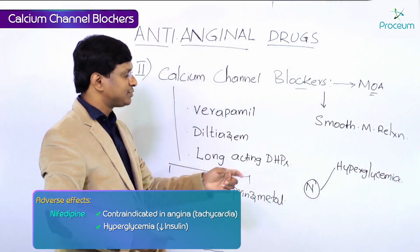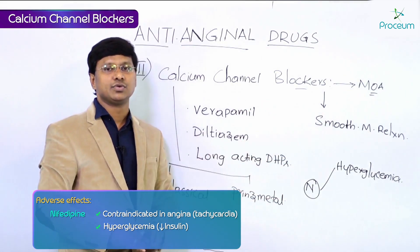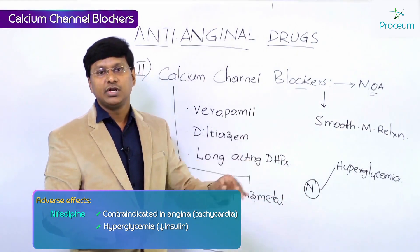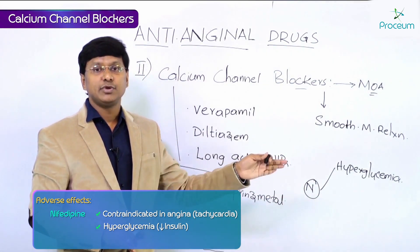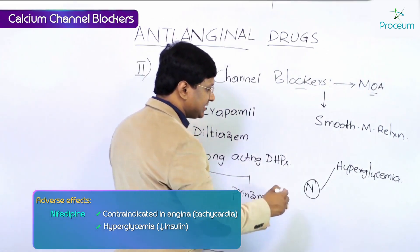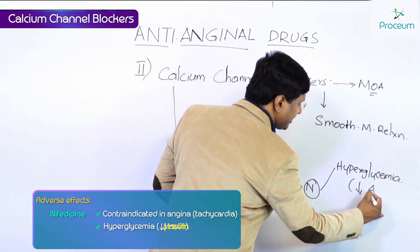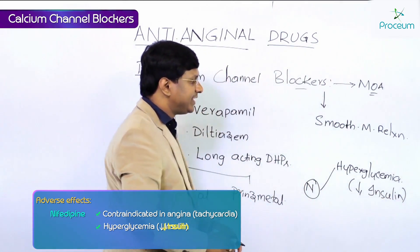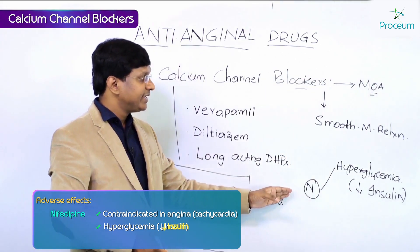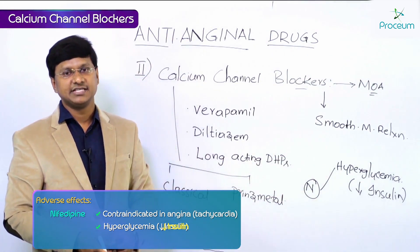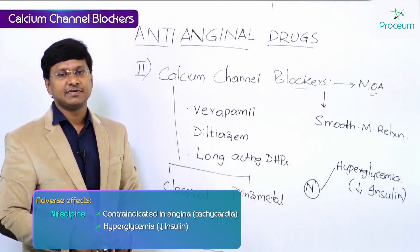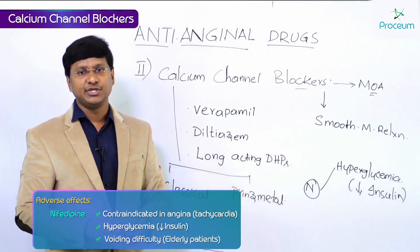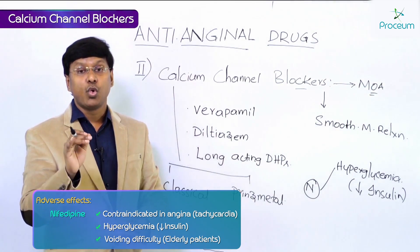Nifedipine causes hyperglycemia — it increases blood glucose levels. How does nifedipine cause hyperglycemia? Nifedipine decreases insulin release, thereby causing hyperglycemia. Another important adverse effect of nifedipine is that in elderly individuals it will cause voiding difficulty.